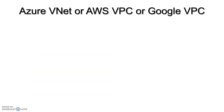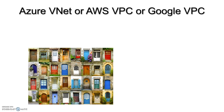If you want to publish anything on the cloud, you may need to use resources such as EC2 instances, Azure VM instances, or App Services. For example, if you're using Azure VMs — say 10 instances — do you want to expose all of them or keep them private? It's like constructing a home: do you want many doors accessible from anywhere, or keep it private?